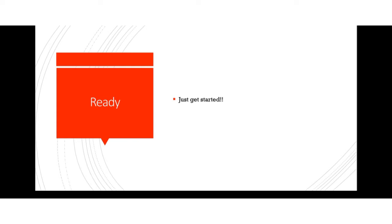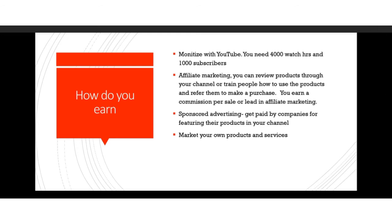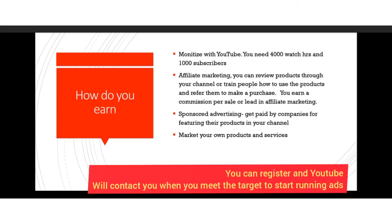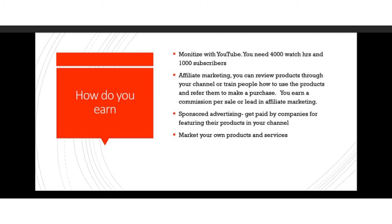Now how do you earn from your channel? The number one way people earn from YouTube is by monetizing your channel. Once you reach 4,000 watch hours and 1,000 subscribers, you can begin running ads. You can register for monetization right away, and when you reach the target YouTube will contact you and let you know you can start running ads.